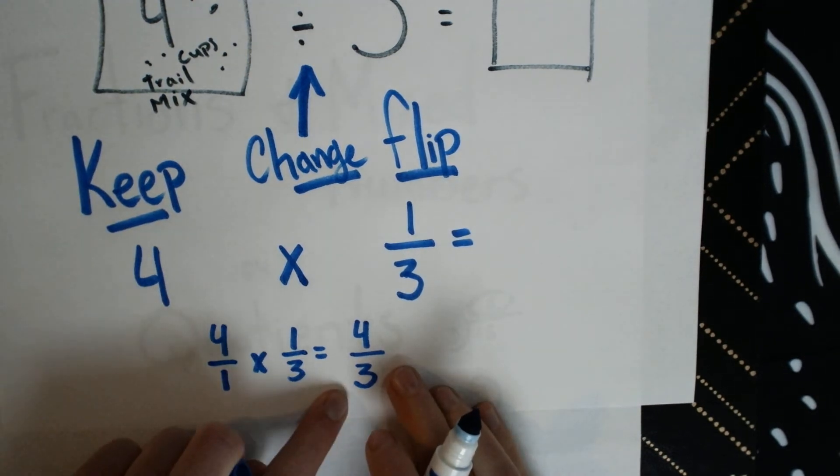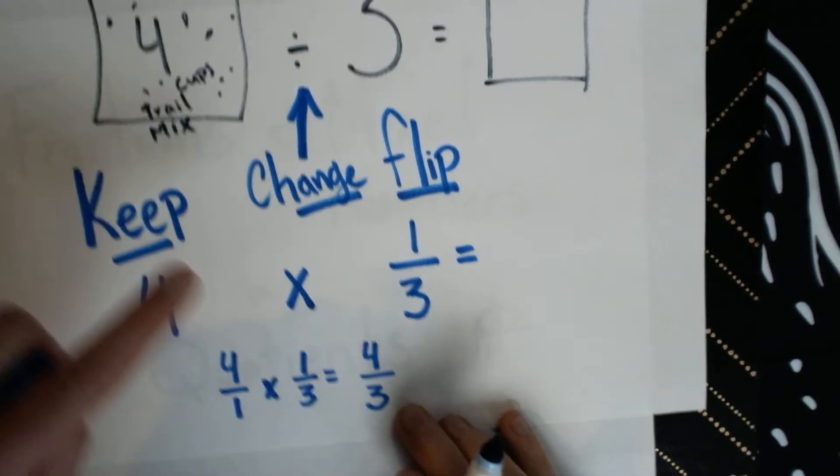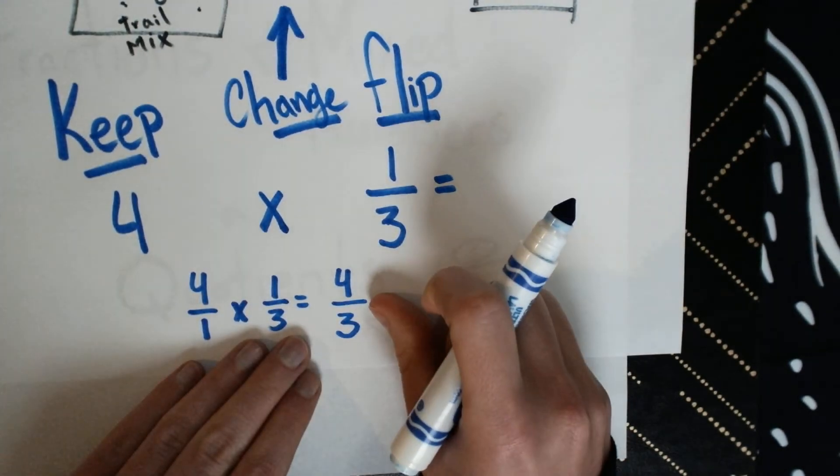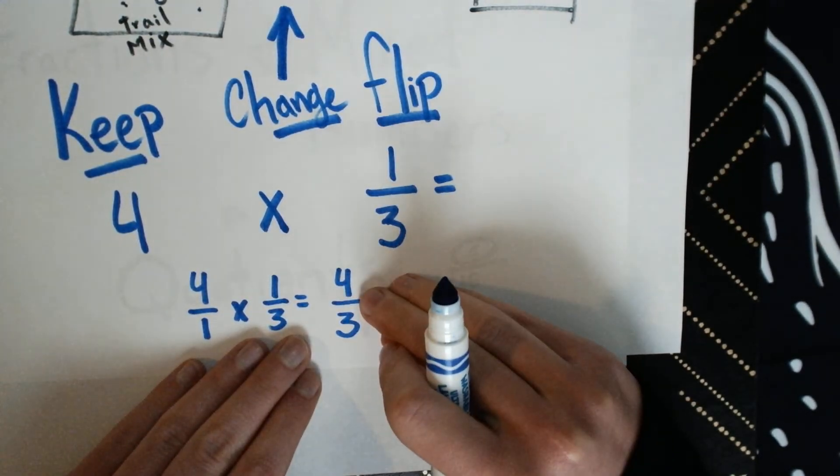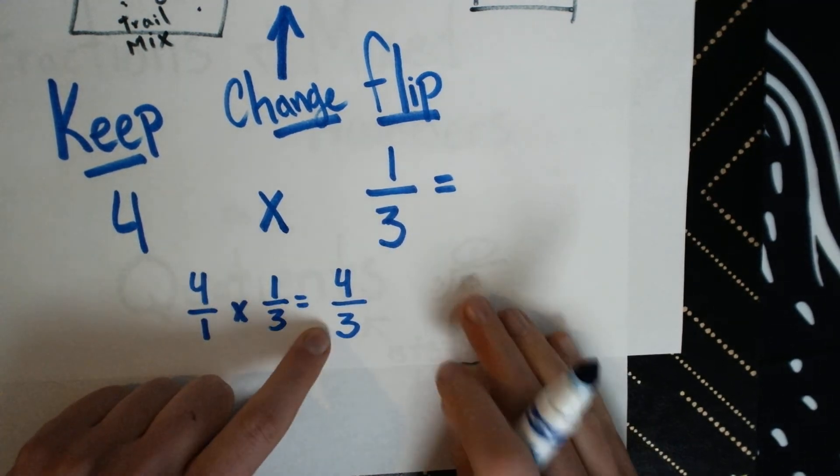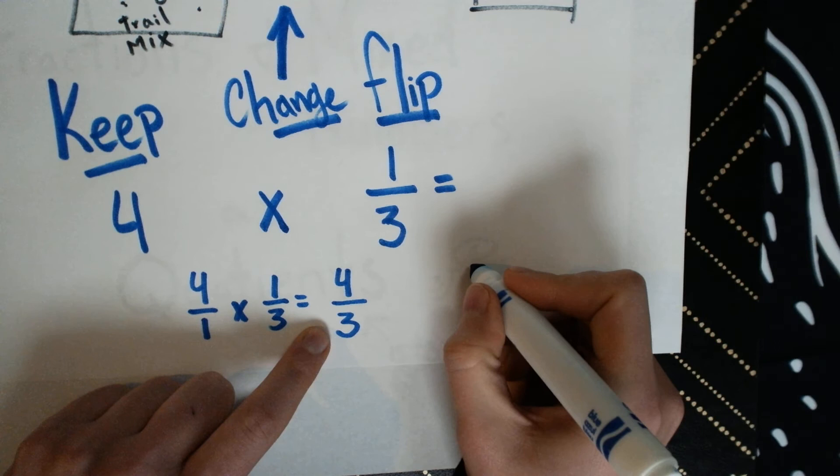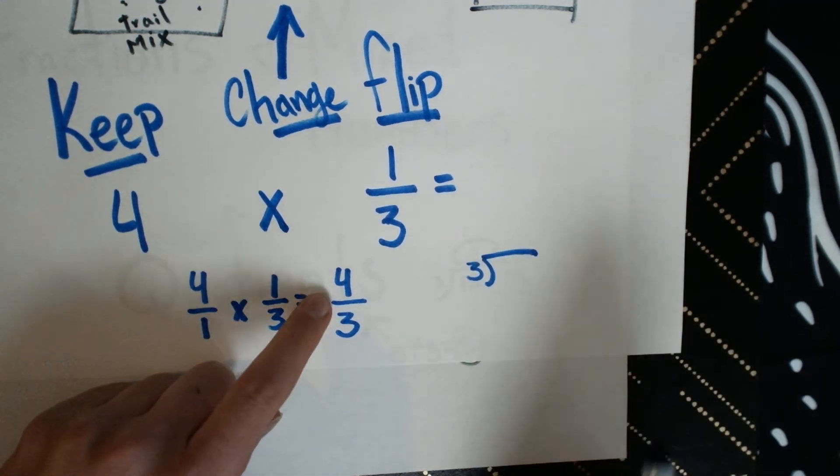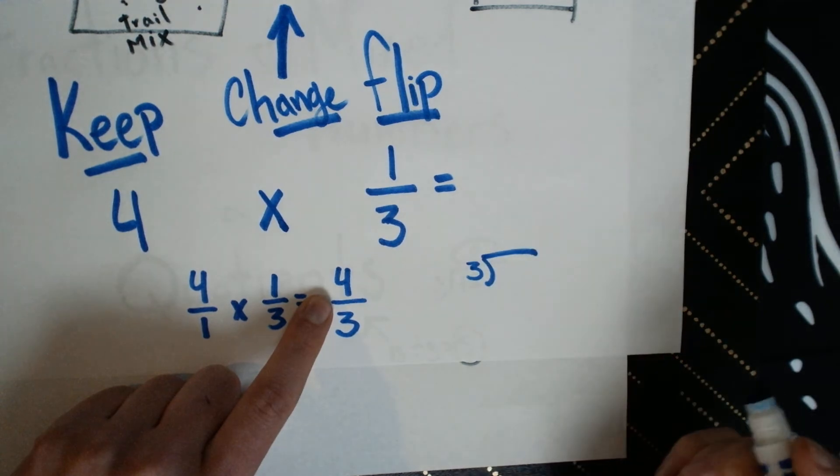Everyone is going to get 4 thirds of a cup of this trail mix. But we have to think. We need to reduce and simplify. Remember, when we simplify our fractions, our denominator becomes our divisor. And the numerator goes inside the division house.